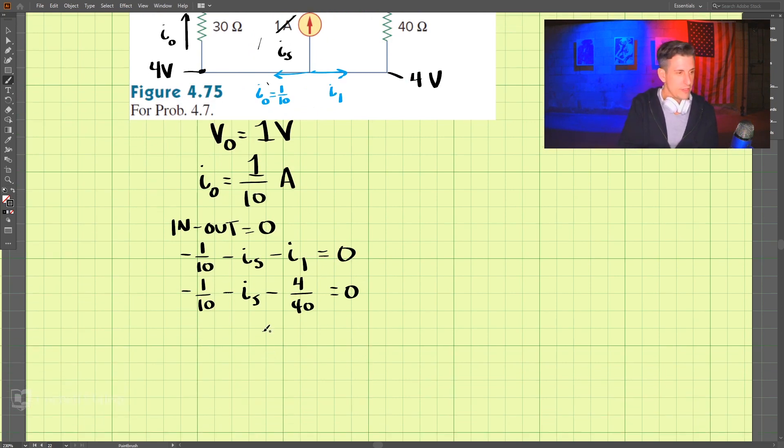So solving this, we have IS comes out to be, it looks like a negative value. So 40 plus 10, so that is negative 1 over 5 amps.